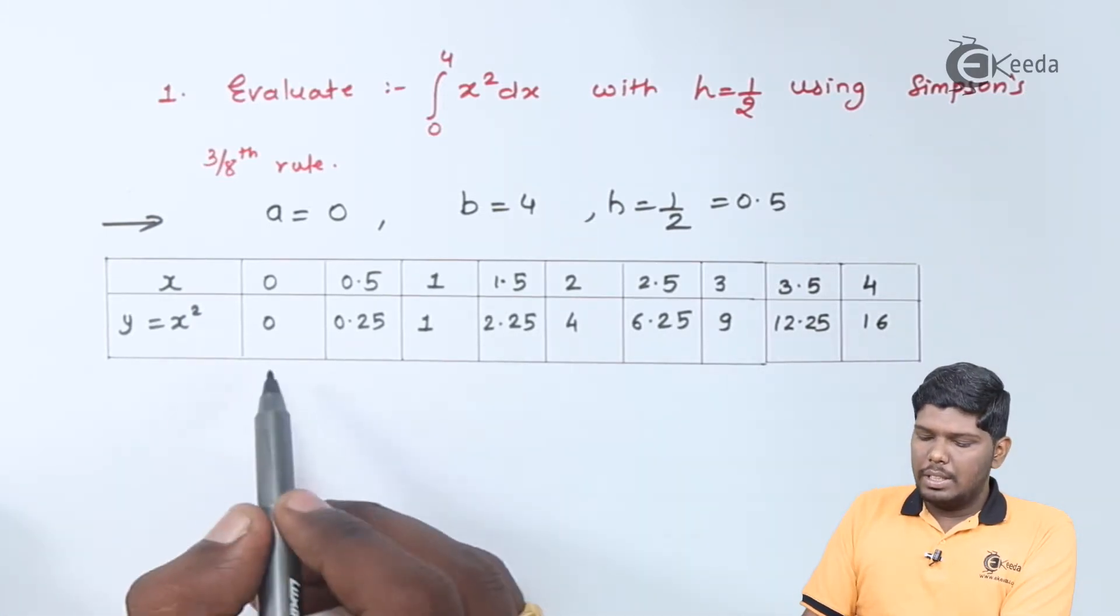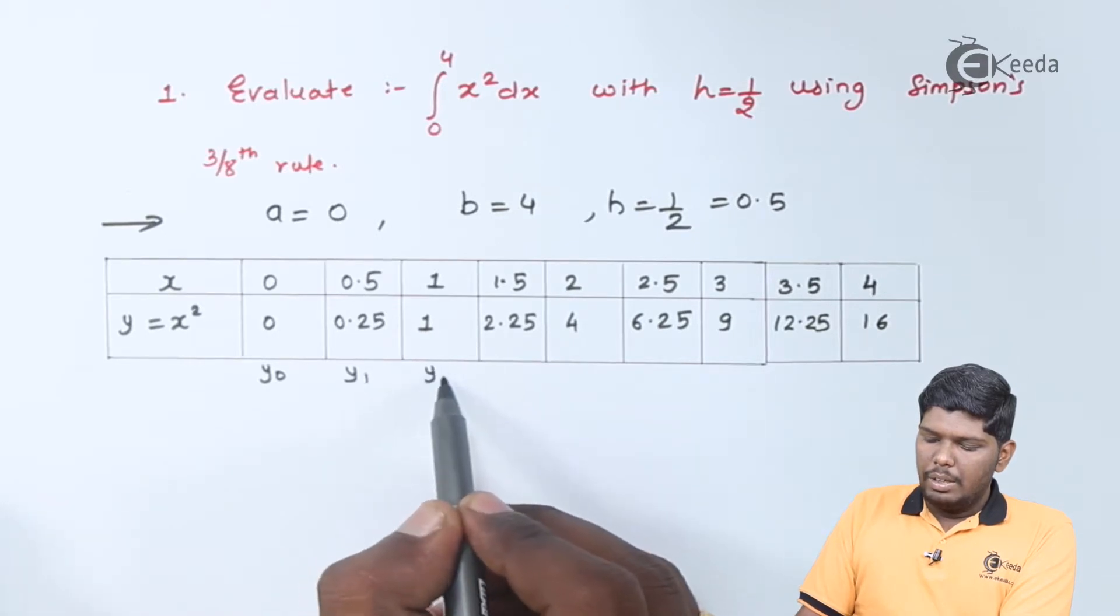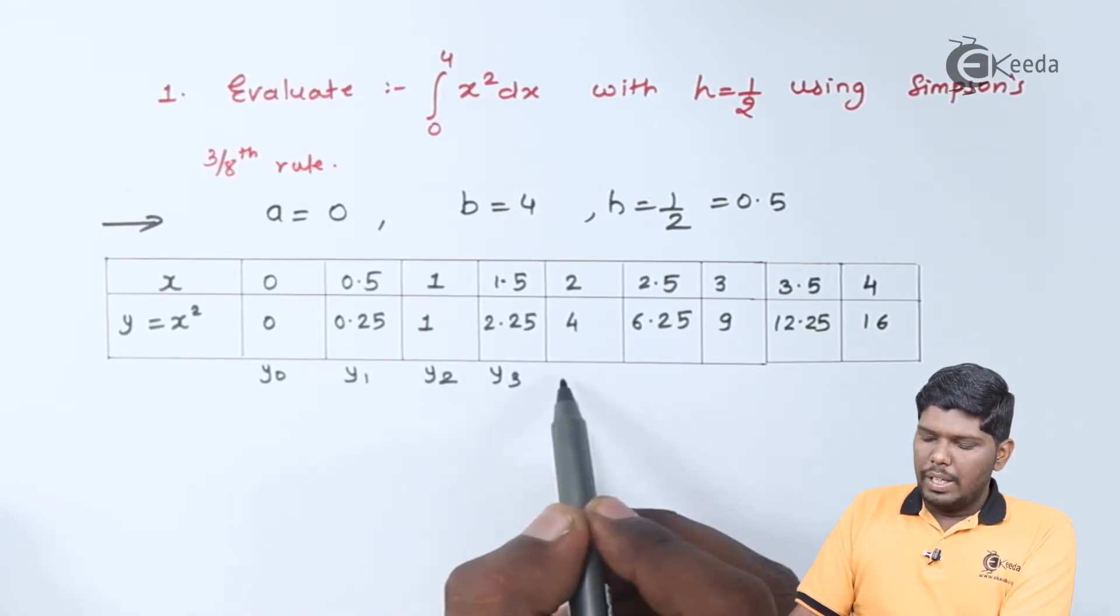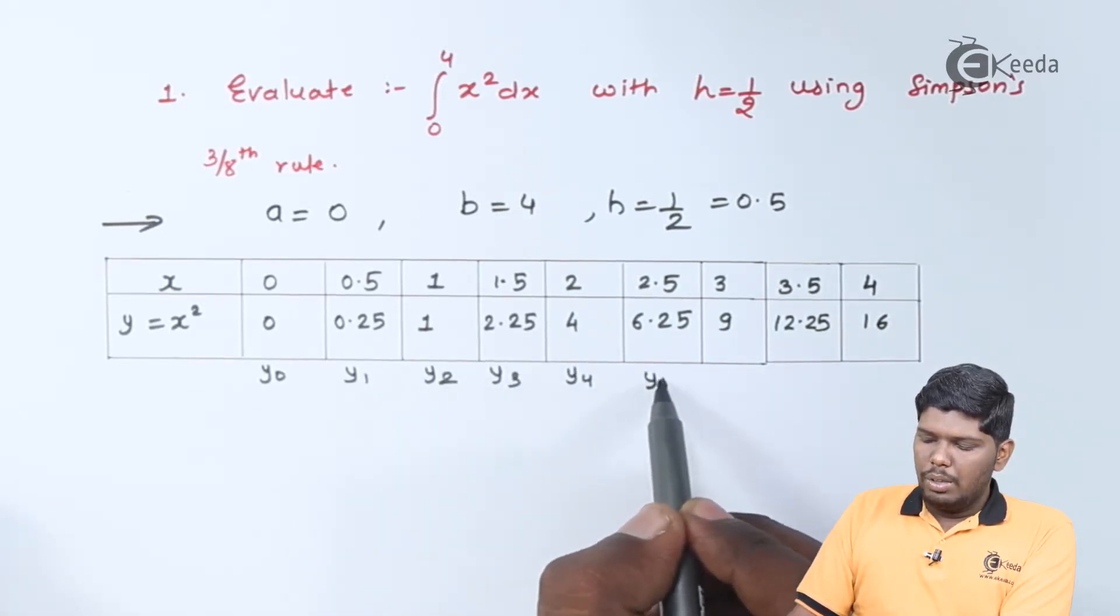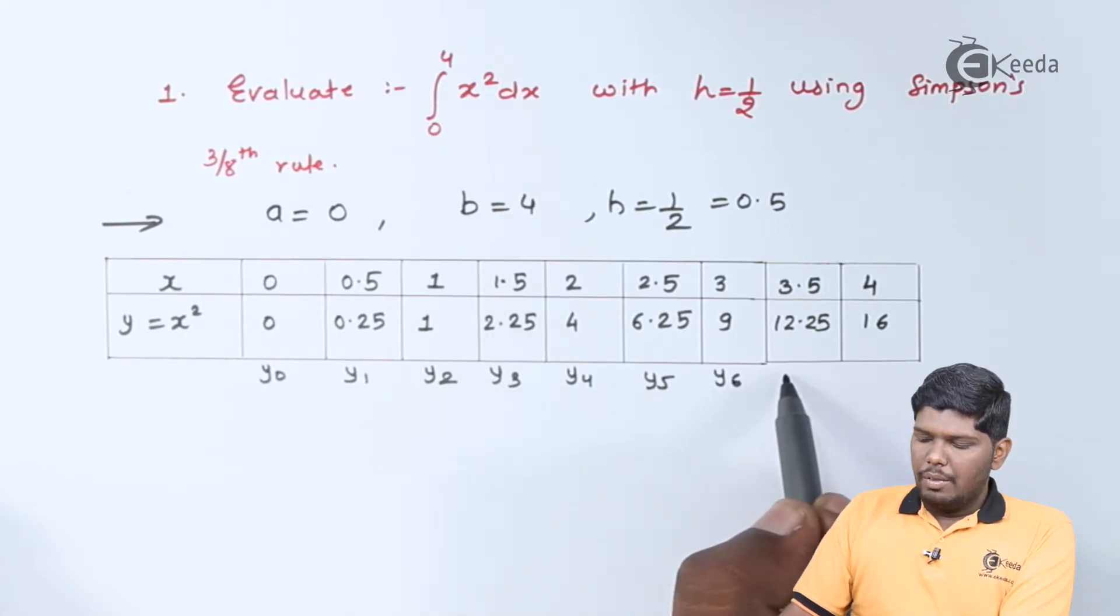After that, we can name these values as y0, y1, y2, y3, y4, y5, y6, y7, and y8.